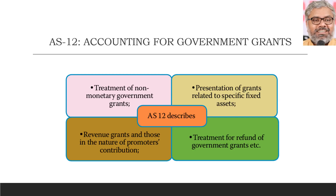One more important point from an examination perspective: how to deal with the refund of government grants. If you received some government grants and passed entries, then when the conditions attached to that grant are not fulfilled by the enterprise, the enterprise may have to refund them. How to treat that is also something AS12 tells us. These are the broad areas of Accounting Standard 12, related to accounting for government grants, which we will go through one by one.